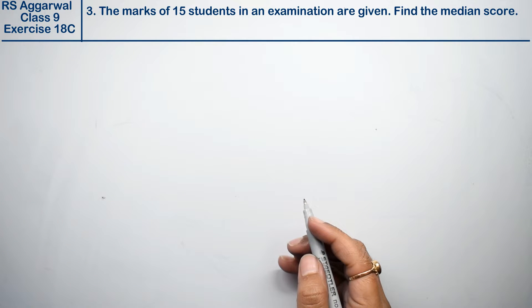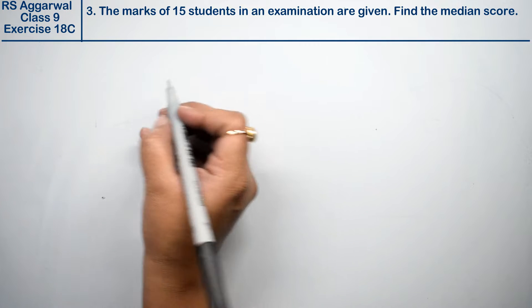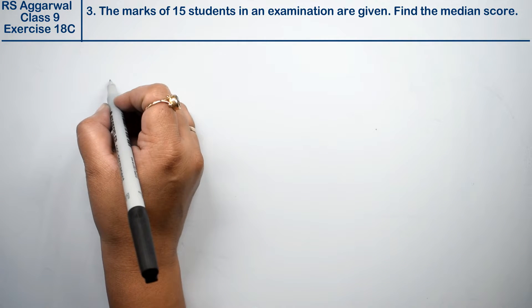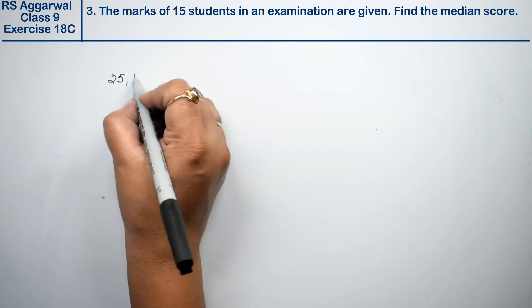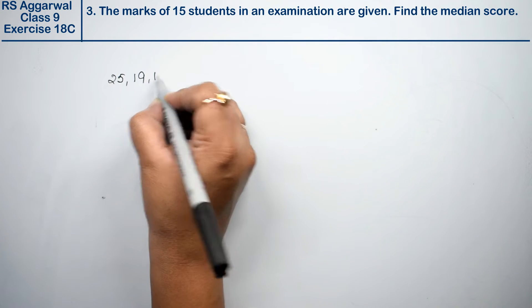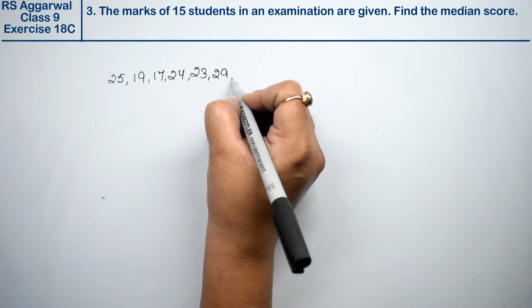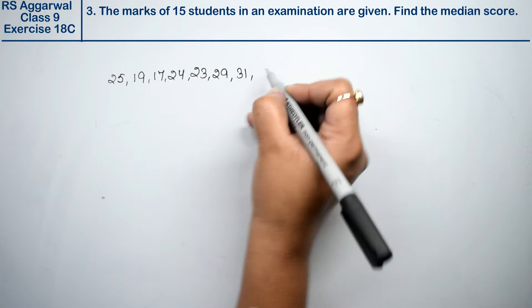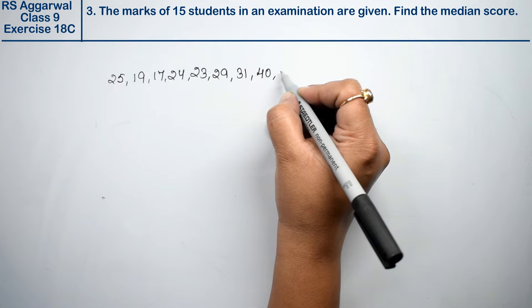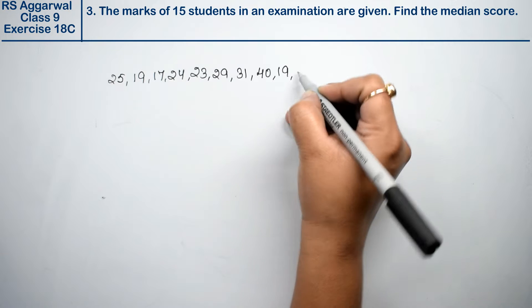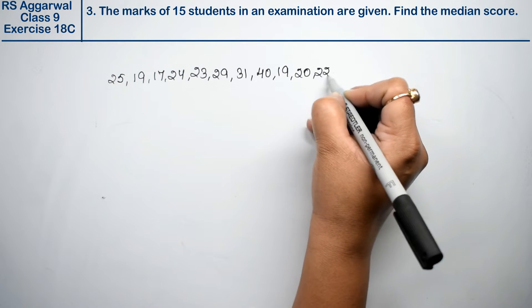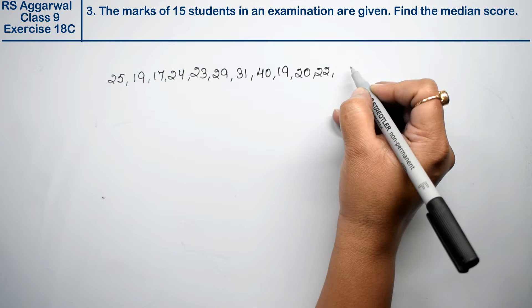Let's do question number 3 of exercise mean, median and mode of ungrouped data. The question is: the marks of 15 students in an examination are given. 25, 19, 17, 24, 23, 29, 31, 40, 19, 20, 22, 26, 17, 35, and 21.